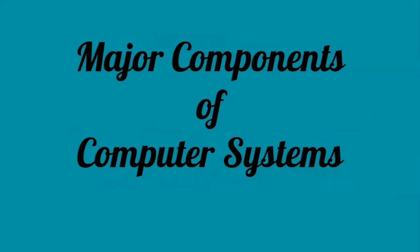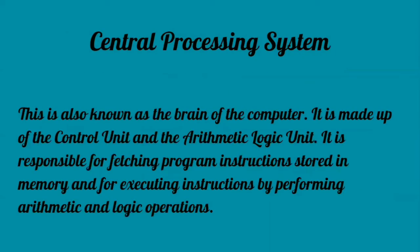Now we will look at the major components of a computer system. The central processing unit is the brain of the computer. It is made up of the control unit and the arithmetic logic unit. It is responsible for fetching program instructions stored in memory and for executing instructions by performing arithmetic and logic operations.